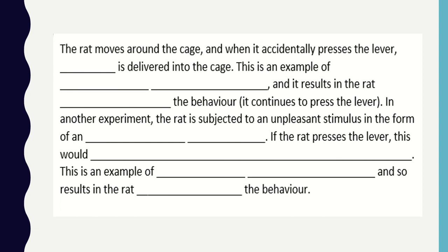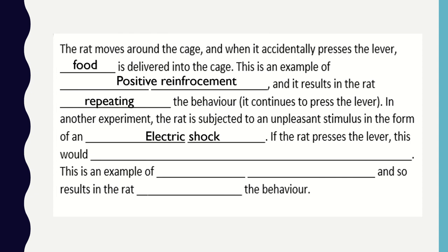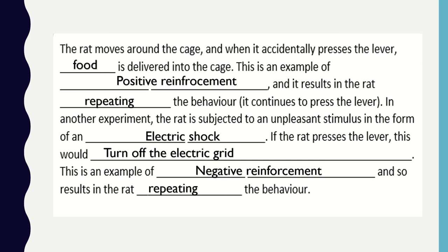Looking at the spaces in your booklet: the rat moves around the cage and when it accidentally presses the lever, food is delivered — this is an example of positive reinforcement, resulting in the rat repeating the behaviour by continuing to press the lever. In another experiment, the rat is subjected to an unpleasant stimulus in the form of an electric shock; if the rat presses the lever, the electric grid turns off — this is an example of negative reinforcement, resulting in the rat repeating the lever-pressing behaviour.